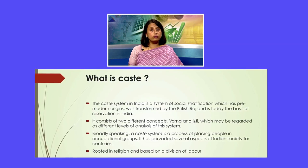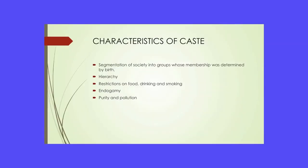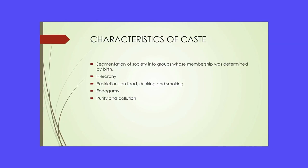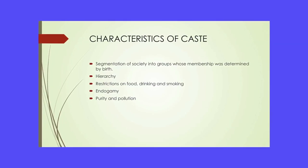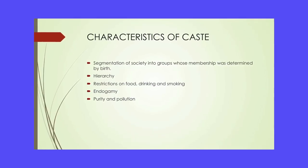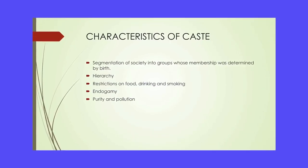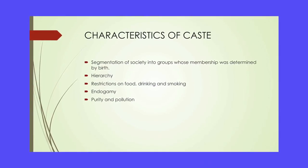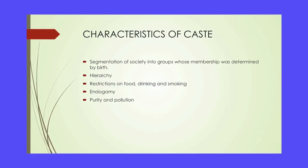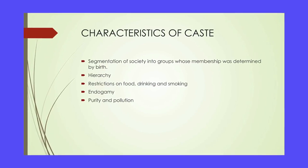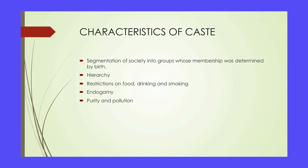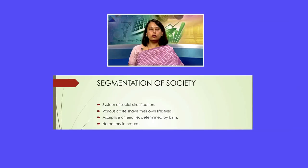What are the characteristics of a caste system? The caste system consists of segmentation of society into groups, hierarchy, restrictions on food, drinking and smoking, endogamy, and the concept of purity and pollution.